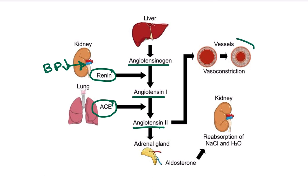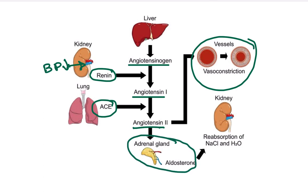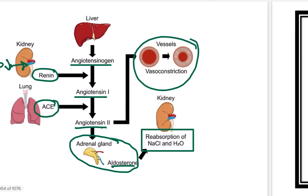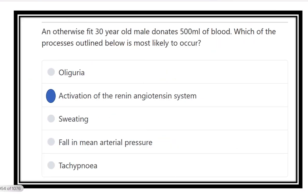Angiotensin 2 goes directly to blood vessels and causes vasoconstriction. It also travels to the adrenal gland, causing release of aldosterone. Aldosterone acts on the kidney to reabsorb sodium chloride and water, and finally blood pressure rises. So with a 500 ml blood loss, the renin-angiotensin-aldosterone system is activated — one of the most important survival mechanisms in our body.